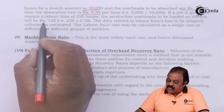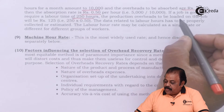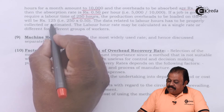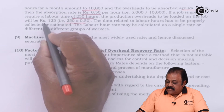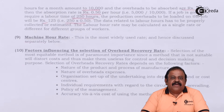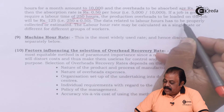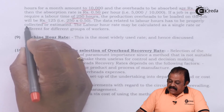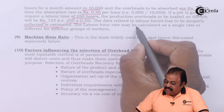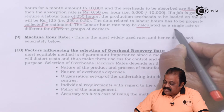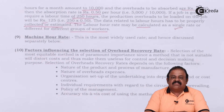If a job requires 250 labor hours, the production overheads to be loaded on the job will be 250 hours multiplied by 50 paise, giving Rs. 125. Data related to labor hours must be properly collected and estimated. The labor hour rate may be calculated as a single rate or differentiated for different groups of workers.